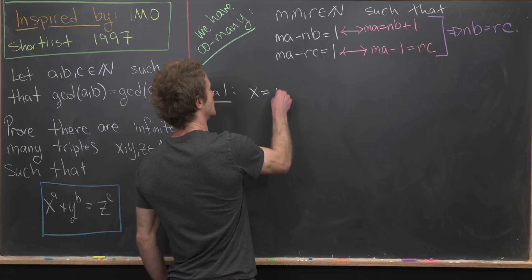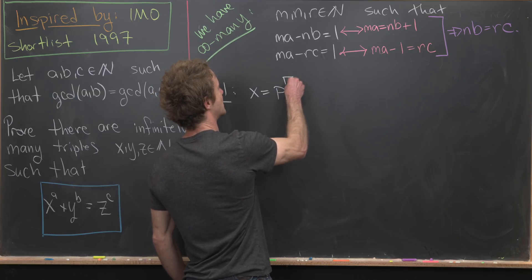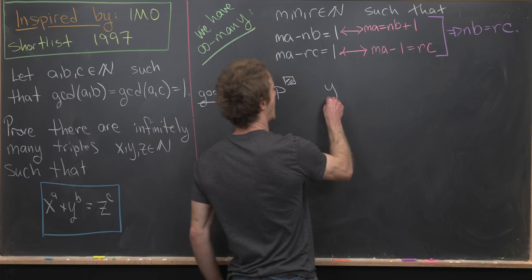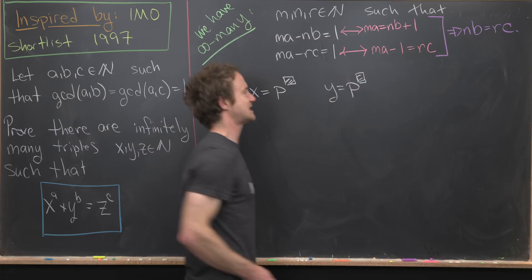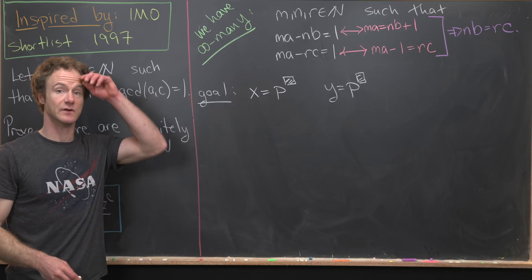So X equals P to the, I'll just put a box here, and then Y equals also P, and I'll just put a box here, and we just have to figure out what to fill in with those boxes.